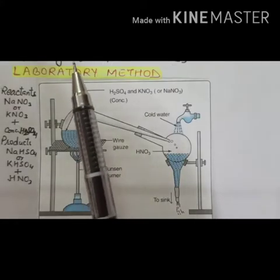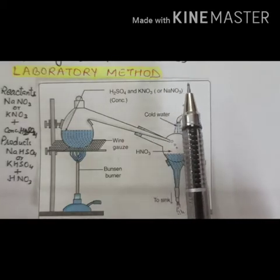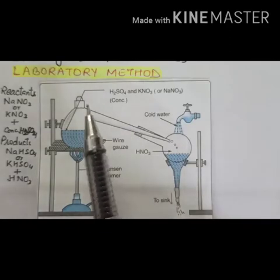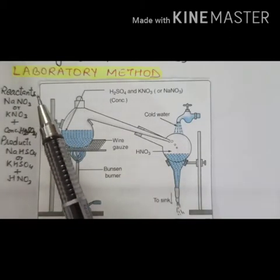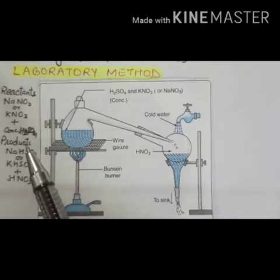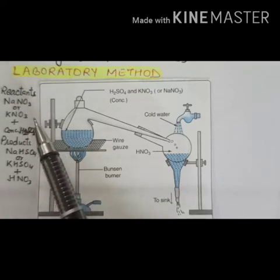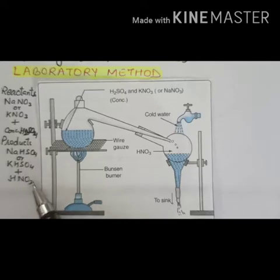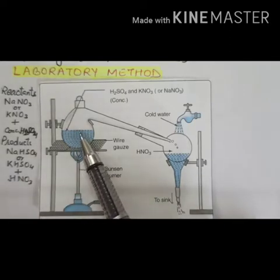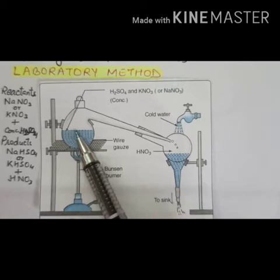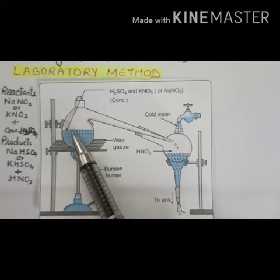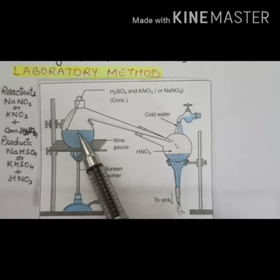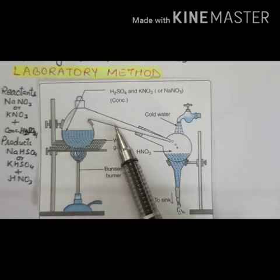Let's discuss the laboratory method of preparation of nitric acid. In the laboratory, we take sodium nitrate or potassium nitrate and concentrated sulfuric acid as reactants. The products are sodium bisulfate or potassium bisulfate and nitric acid. Concentrated sulfuric acid and potassium nitrate or sodium nitrate are taken in equal parts and heated gently to 180–200 degrees Celsius in a glass retort. The vapors of nitric acid are produced, which are then condensed in a receiver.